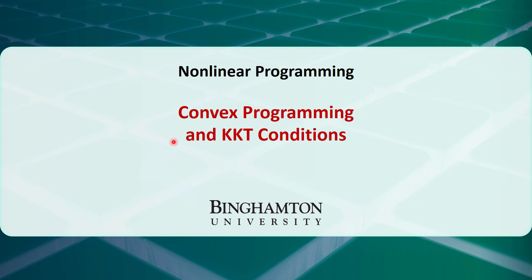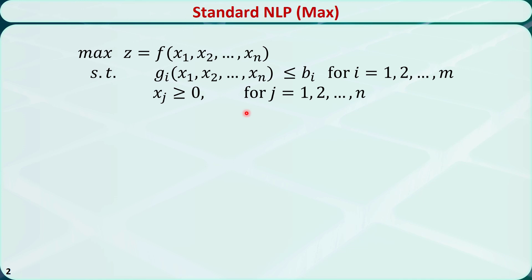In this video, I will talk about nonlinear convex programming and how to use KKT optimality conditions to solve some convex programming problems. I will limit our discussion to maximization problems in this general form. If you have a minimization problem, you can convert it to a maximization problem by maximizing the opposite of the objective function. We try to find the values of x1, x2 through xn that maximize the objective function while satisfying all these m constraints.